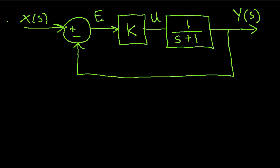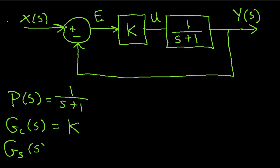By looking at this, hopefully you can see that my plant has a transfer function of 1 over s plus 1. The controller has a transfer function of just the gain k, and the sensor transfer function, since I have the output y directly fed back into the error, just has a transfer function of 1.